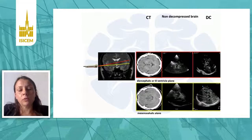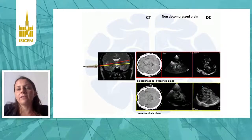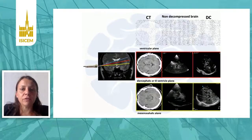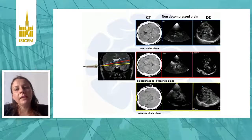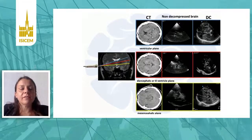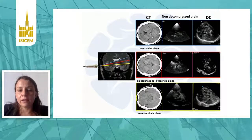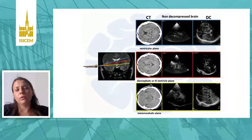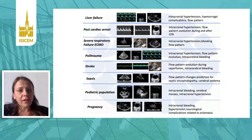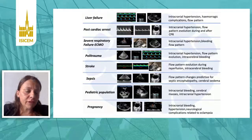At the diencephalic plane you can see the third ventricle and measure the midline shift. At the ventricular plane, which is a bit more cranial, you can assess and measure the size of the lateral ventricles and evaluate anatomical changes or neurological complications. This gives an overview of the different clinical applications in non-neurocritical care.